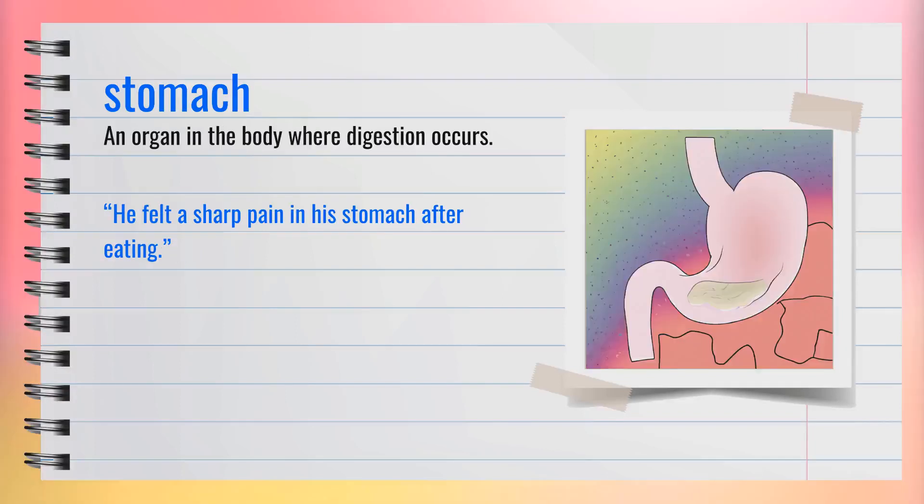The word stomach, spelled S-T-O-M-A-C-H, is a noun. The stomach is an organ in the body where digestion occurs. It's similar to terms like belly and abdomen. For example, he felt a sharp pain in his stomach after eating. In summary, the stomach is where digestion takes place.